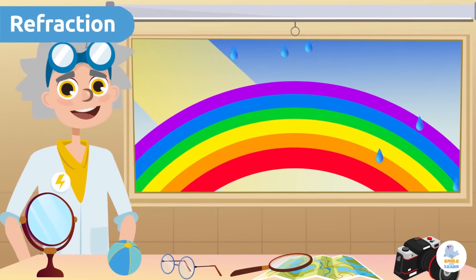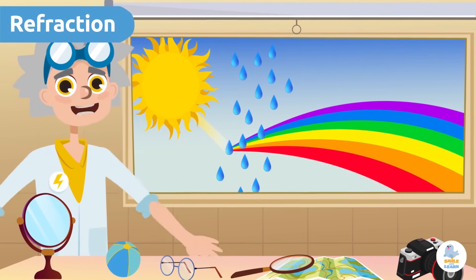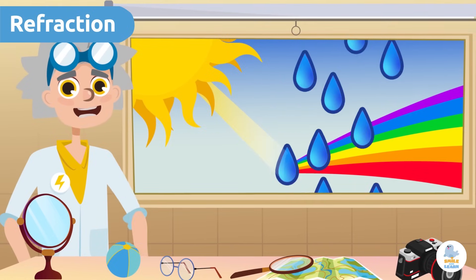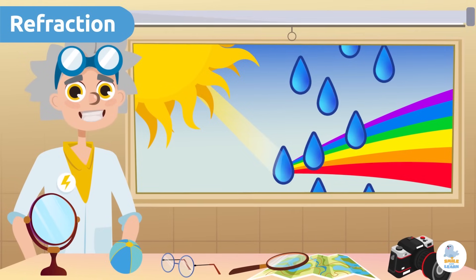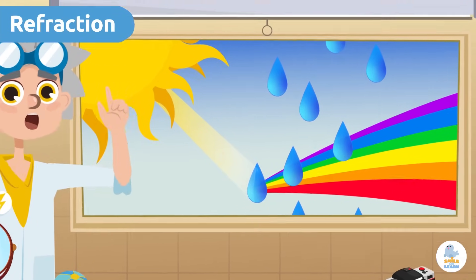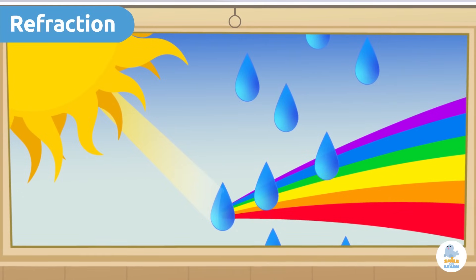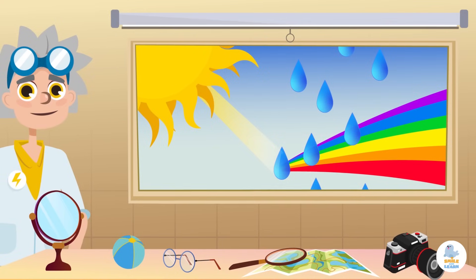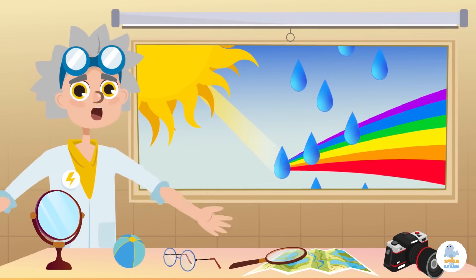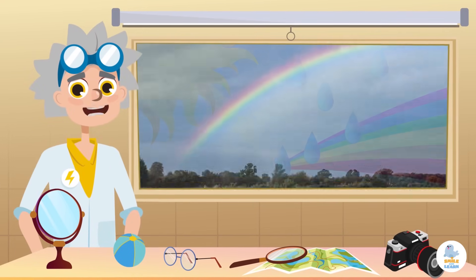Rainbows are formed when sunlight passes through raindrops. Thanks to refraction, white light is converted into a colored beam containing red, orange, yellow, green, blue, and violet. Wow, we've learned so many interesting things about light, haven't we? I hope the next time you see a rainbow...